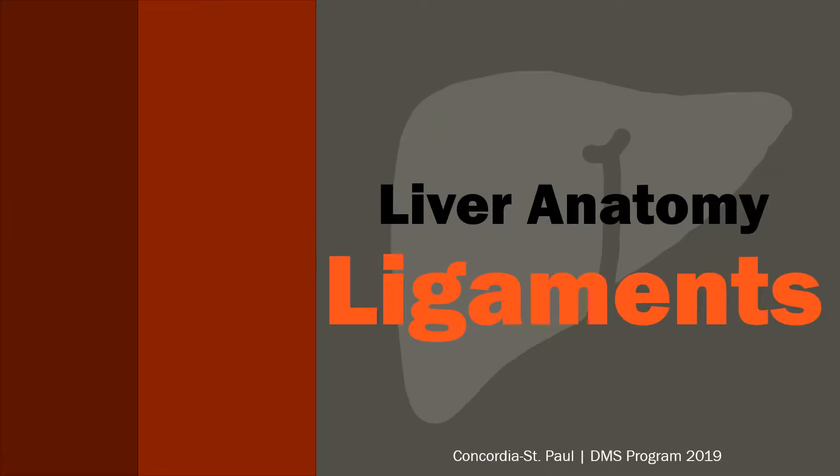Ligaments found in the abdomen help to anchor organs so that they don't move around too freely in the abdominal cavity. For the liver, we will learn about ligaments that connect to the diaphragm, abdominal wall, stomach, and the portal triad structures. There are eight ligaments to know for anatomy, some of which will play a vital role as liver landmarks on ultrasound.